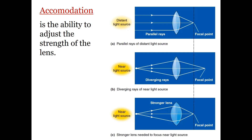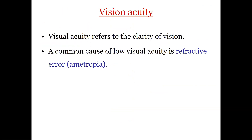Visual accommodation is the adjustment to the strength of the lens. For a near object, contraction occurs and the lens accommodates, resulting in a clear image for near objects.